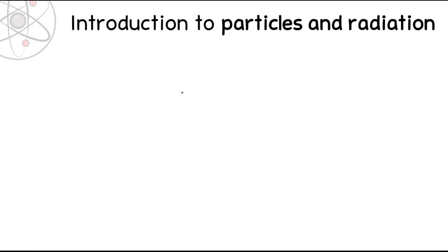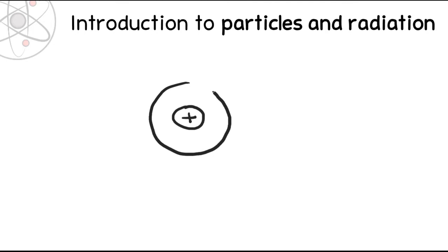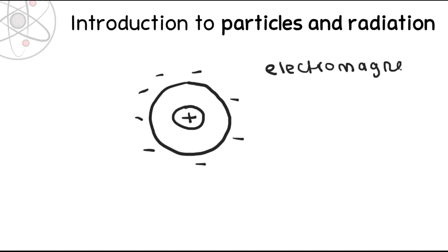At GCSE you're taught that an atom has a nucleus, which is positive, and it's surrounded by electrons, which are negative. What you want to know for A-level physics is that what holds this whole atom together is something called the electromagnetic force, and that is what holds this negative charge to this positive charge. So now we'll look at this atom in a bit more detail.